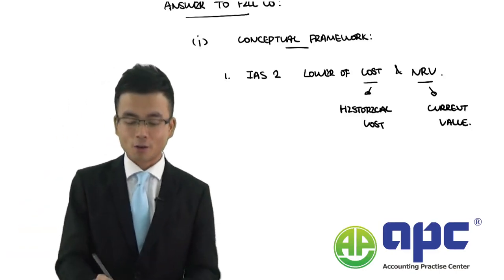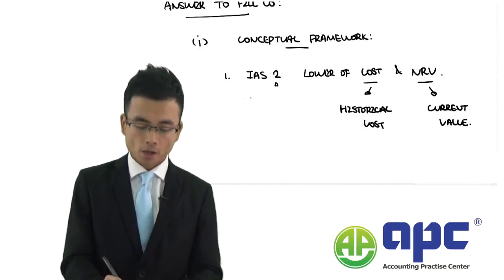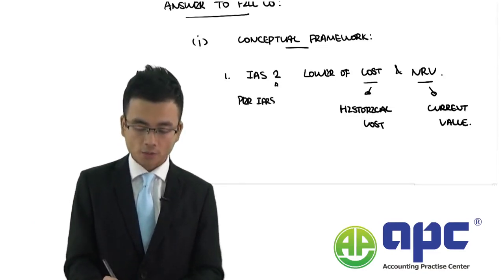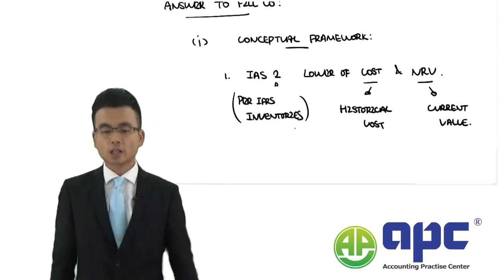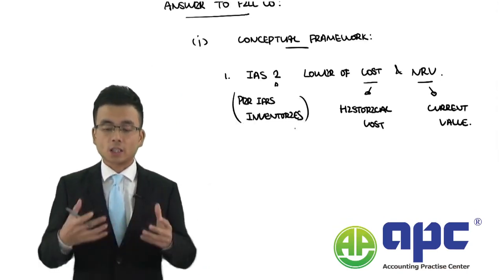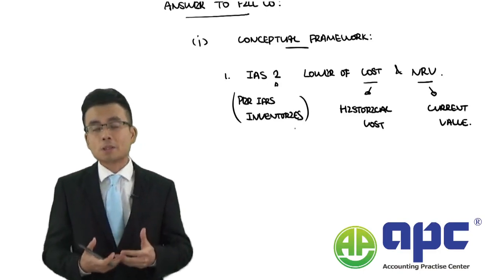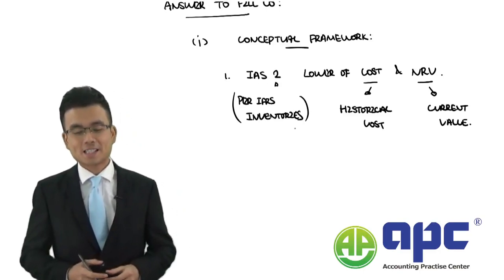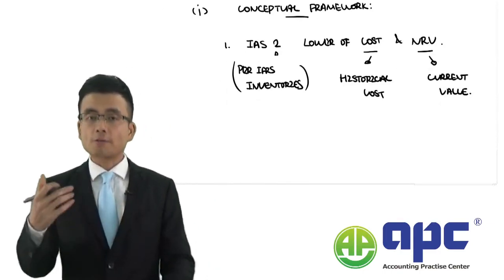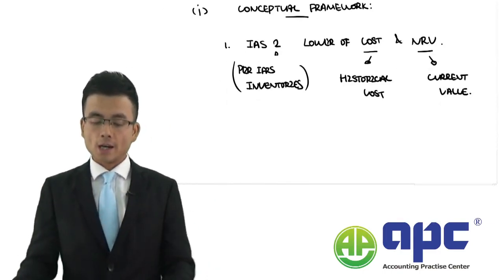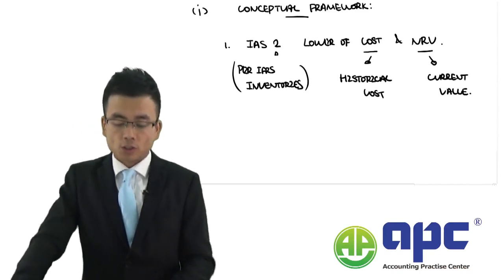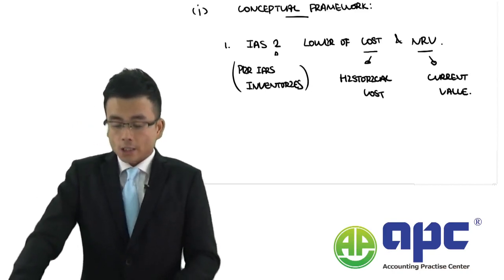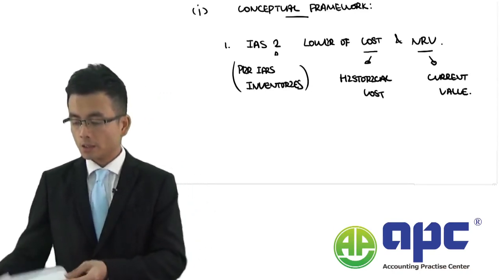Don't worry — later in the course we will repeat the accounting standards including their numbers again and again. The conceptual framework can affect the value of inventories because in some circumstances you recognise inventories at historical cost and sometimes at current value. That's the first point we can talk about.